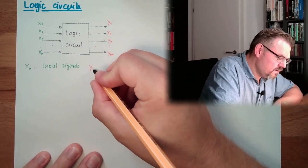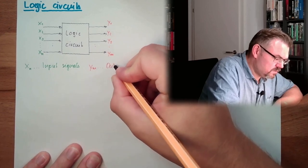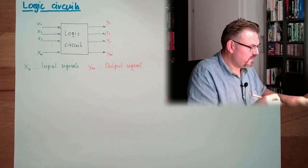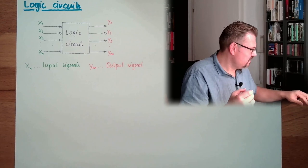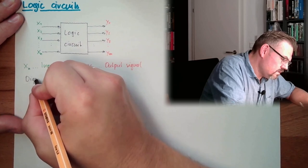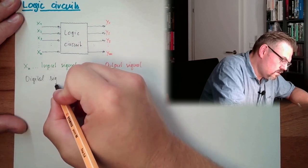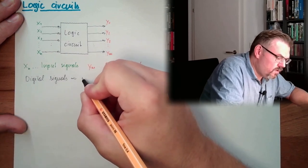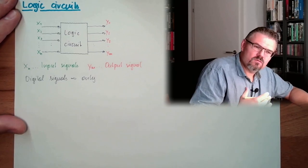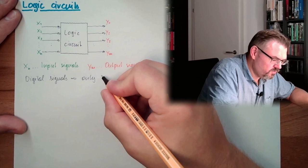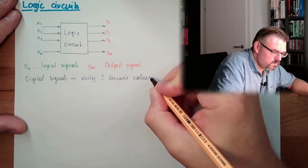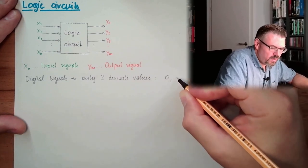So the y are output signals. These are digital signals. We are talking about digital signals. We only have two discrete allowed values.